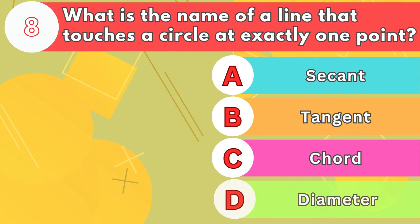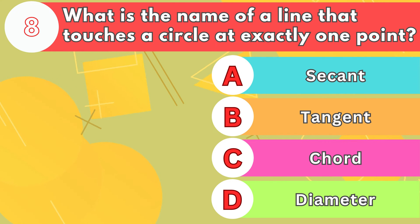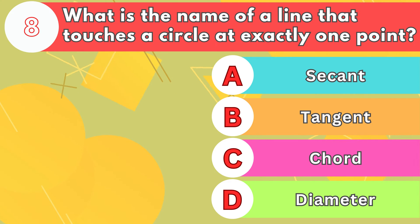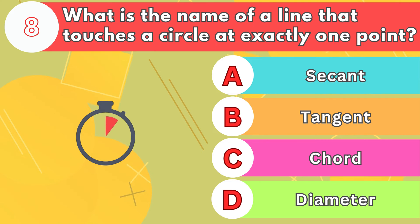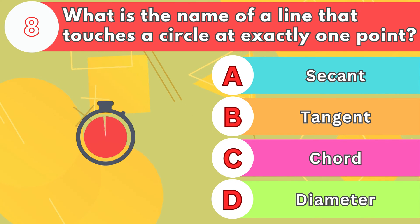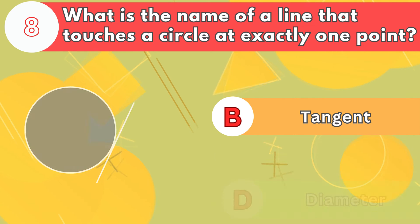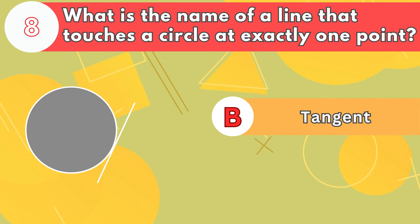Number 8. What is the name of a line that touches a circle at exactly one point? The answer is letter B, tangent.